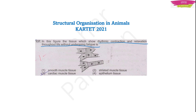The options are smooth muscle tissue, striated muscle tissues, cardiac muscle tissues, and epithelium tissues. The question is about contraction and relaxation, which is only shown by muscles. So the fourth option, epithelium tissues, is wrong because it is not a muscle. Among the remaining three — smooth, cardiac, and striated muscle tissues — the correct answer is cardiac muscle tissues.